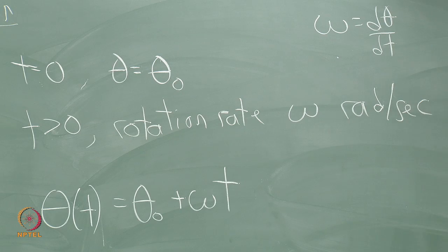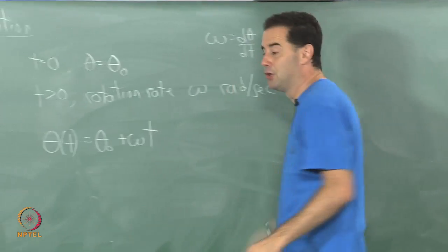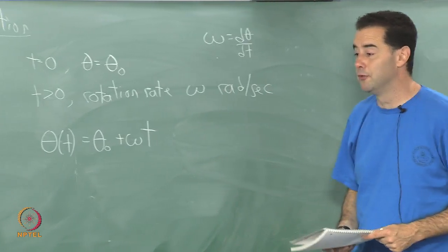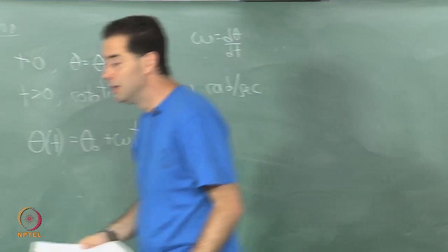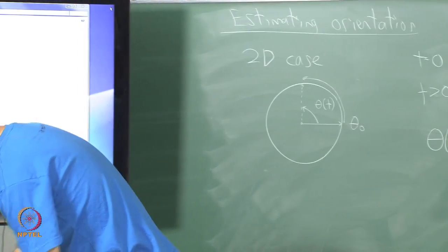That's all: how long has it been going multiplied by the rotation rate gives the total amount of rotation in radians.